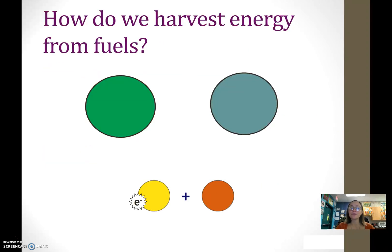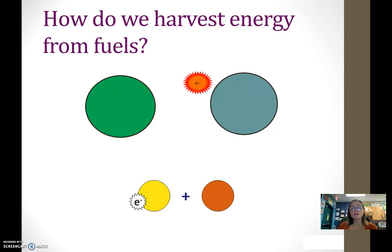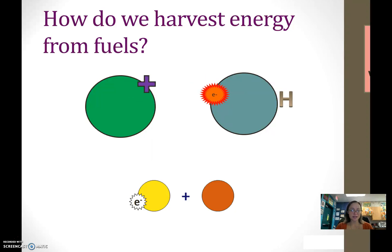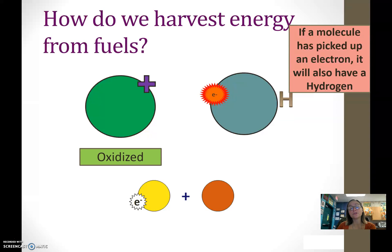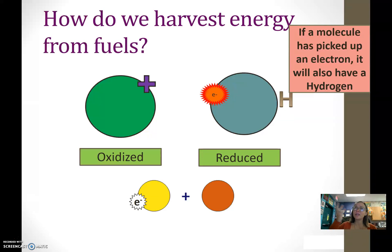When we talk about donating or receiving electrons, we use the terms oxidation and reduction. When a molecule donates or gives up an electron, we call it oxidized. If a molecule has picked up or gained an electron, it also gains a hydrogen to balance the charges, and that molecule is reduced. A reduced molecule gained electrons and will have an H as part of it, whereas an oxidized molecule will be left with a positive charge.